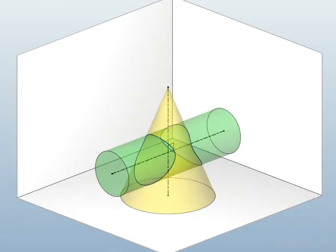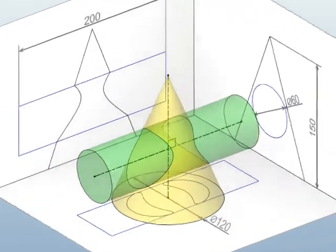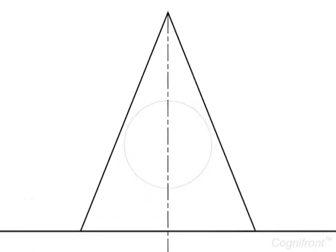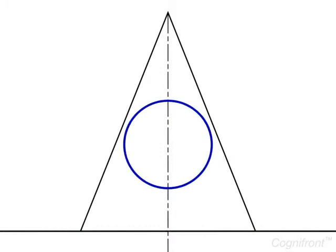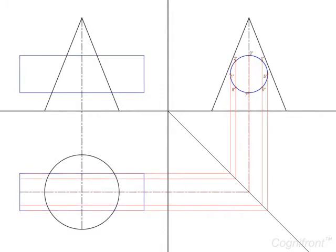To obtain the true representation of the lines of intersection, we will first construct its orthogonal views. The cone is resting with its base on HP, so its top view would be a circle. From the top view, first draw the front view and then the side view of the vertical cone. The penetrating cylinder can be seen in its true shape in the side view. Draw a circle with its center on the axis of the cone at a distance of 30 millimeters from its base. Now divide this circle in the side view of the cylinder into eight equal parts and project lines from these points onto the top view and front view.